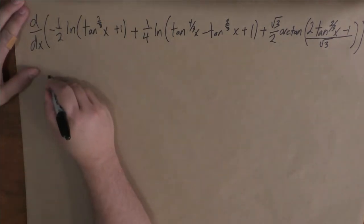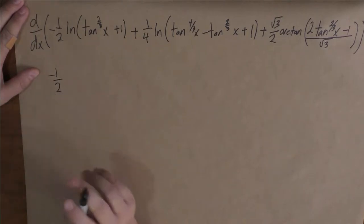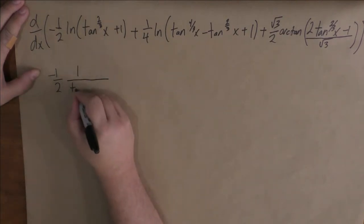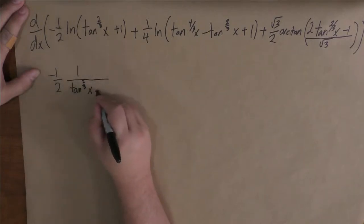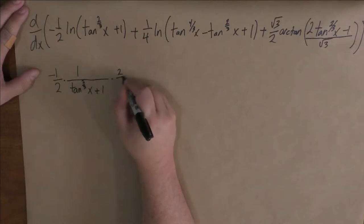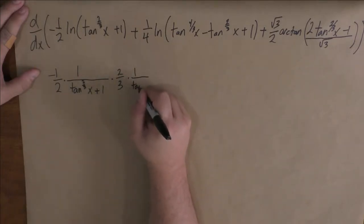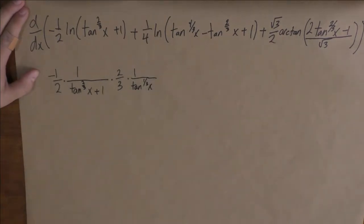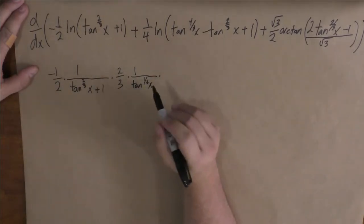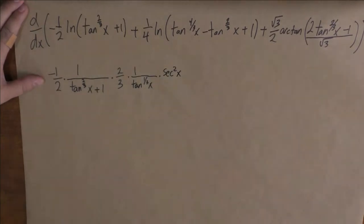So the first term: we keep the minus one-half. The derivative of natural log is one over the thing inside, so that's tangent to the two-thirds x plus one. Now because we have a function inside, we have to differentiate the function. The derivative of tangent to the two-thirds x is two-thirds times one over tangent to the one-third x — I'm writing one-third instead of cube root just for consistency — and again this is a complex function, so we apply the chain rule again and get secant squared x for the derivative of tangent. That's our first term.